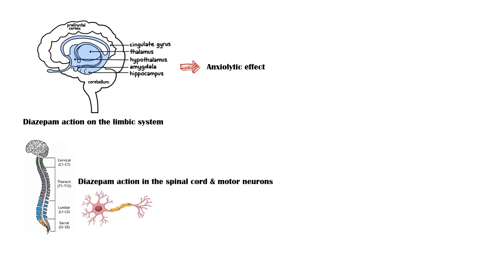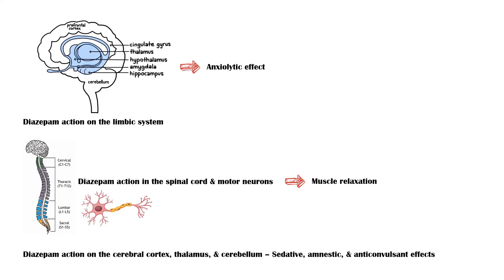Diazepam action on the limbic system causes its anxiolytic effect. Diazepam action in the spinal cord and motor neurons leads to muscle relaxation. The sedative, amnestic, and anti-convulsant effects are mediated by the action of diazepam on the cerebral cortex, thalamus, and cerebellum.